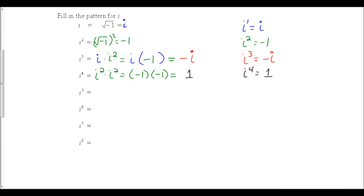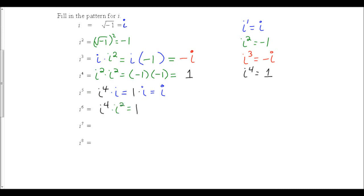What happens if we keep getting bigger exponents? i to the fifth can be broken down into i to the fourth times i to the first. i to the fourth was just 1, and i to the first is just i, so 1 times i is i. For i to the sixth: i to the sixth is i to the fourth times i squared. i to the fourth is 1, i squared is negative 1, and 1 times negative 1 is negative 1.